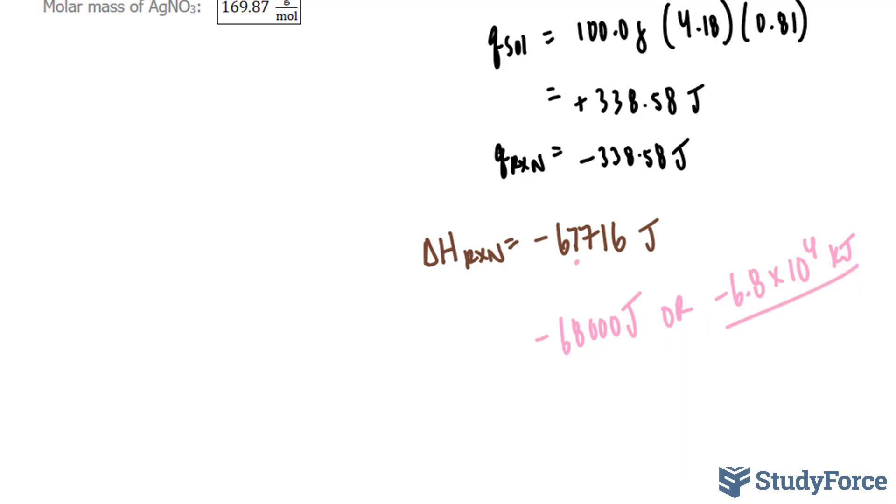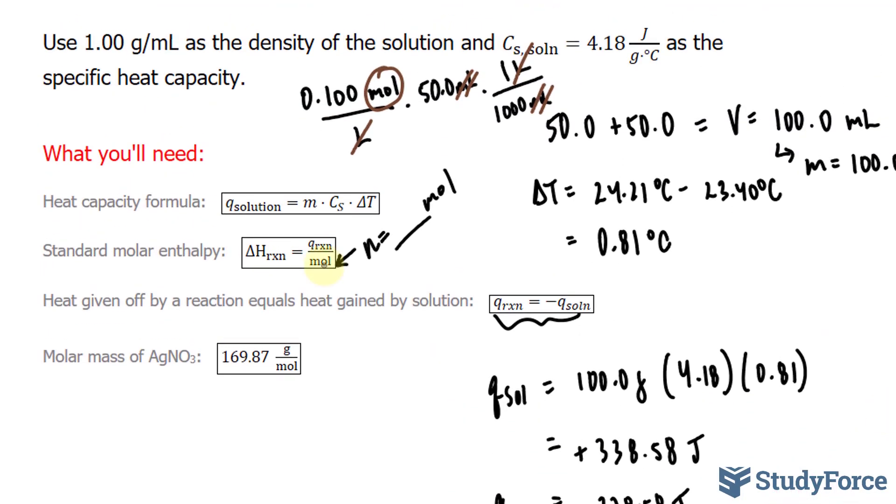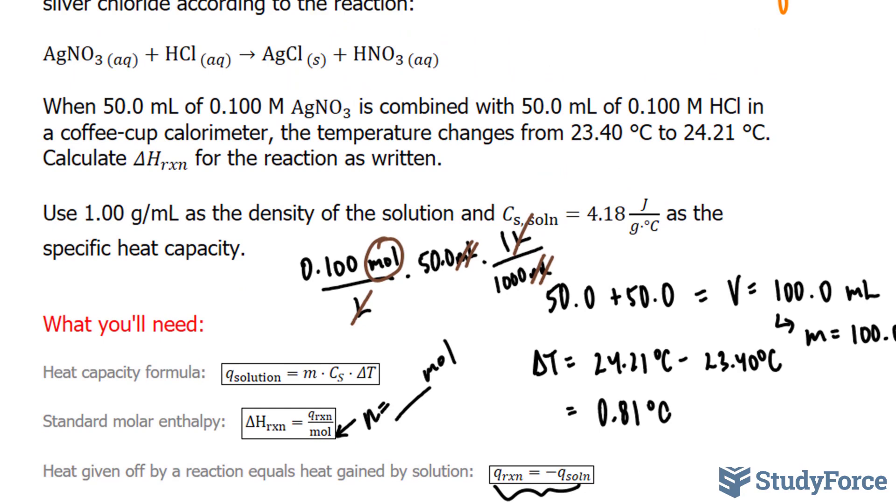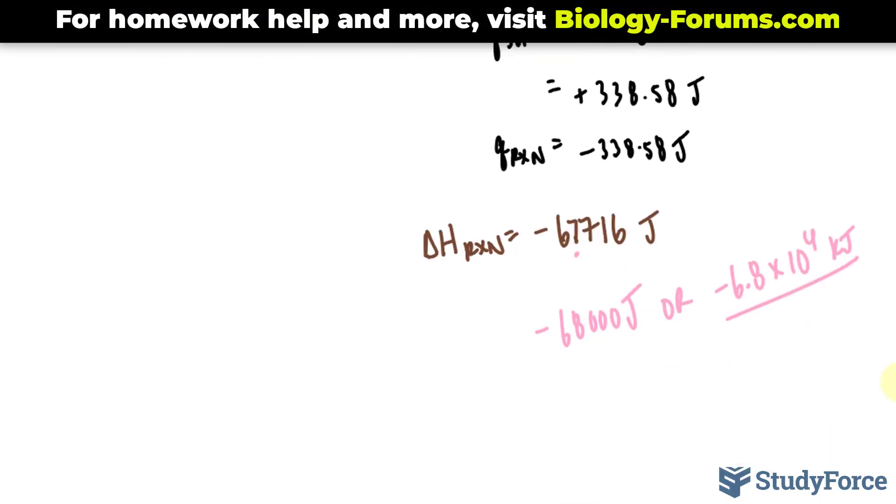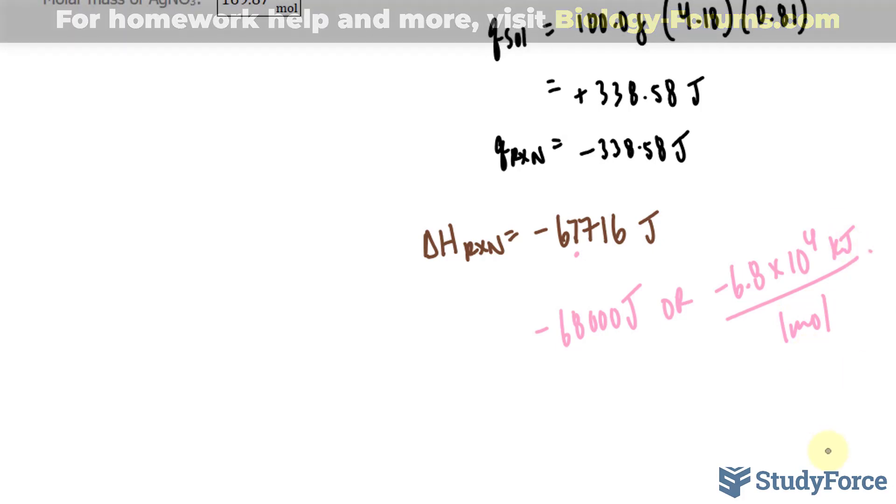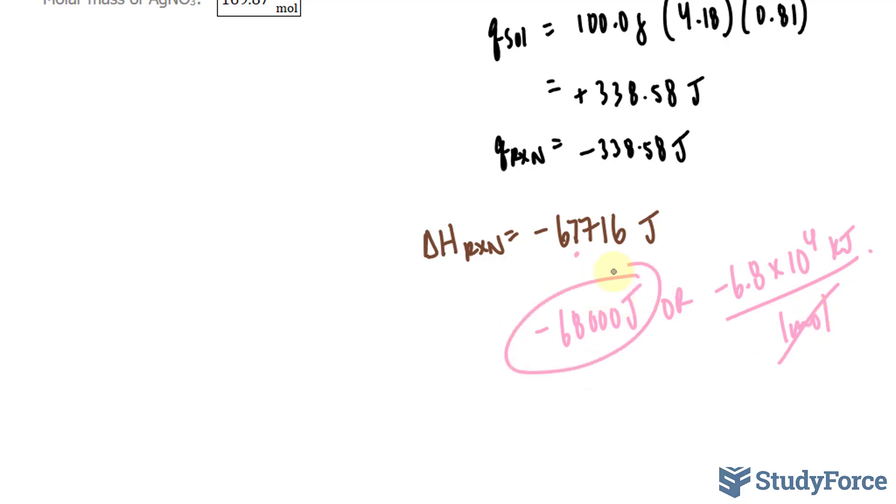One thing to keep in mind before we conclude is that our delta H of the reaction was per mole. If you look at the chemical formula, we only had one mole of AgNO3, so your answer should be per one mole. Technically, you were supposed to multiply this by one mole of AgNO3, and the mole unit would cancel out, leaving you with only joules.